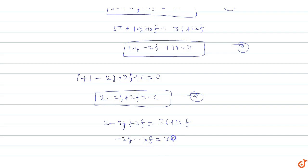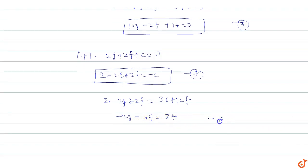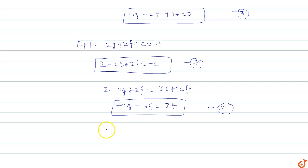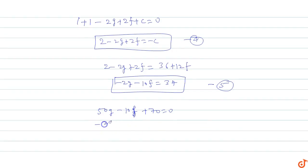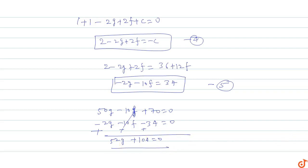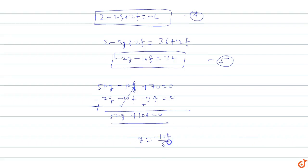From equations three and five, multiplying equation three by 5: 50g - 10f + 70 = 0. Equation five gives -2g - 10f - 34 = 0, which with sign change becomes -2g - 10f - 34 = 0. Adding, 52g + 104 = 0, so g = -104/52 = -2. Therefore g = -2.